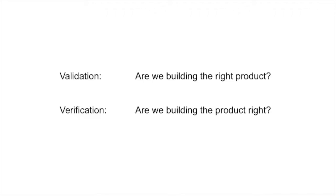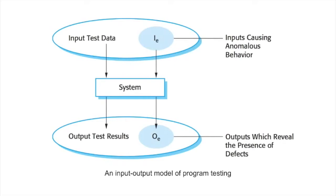There's only a subtle difference between these two. The process of testing can be understood from this picture wherein the system to be tested is given with input test data and the system generates its output according to its program. This output will reveal the presence of any defects or anomalies, and that can be used to understand what error the program has using various methods. This picture gives an input-output model of program testing.